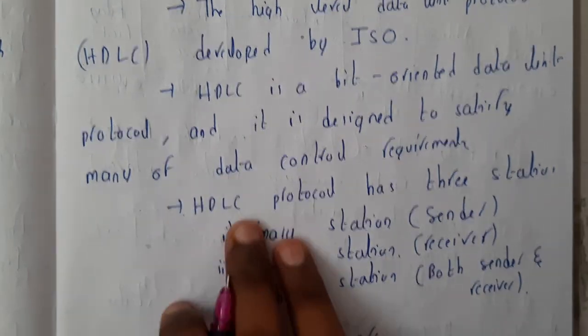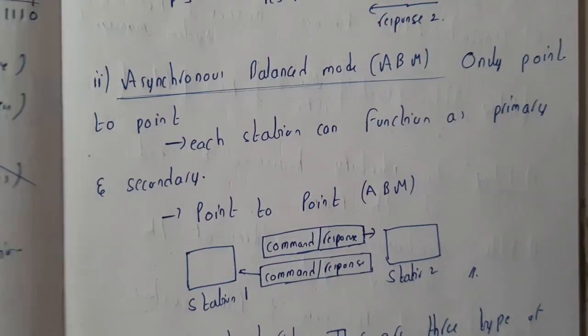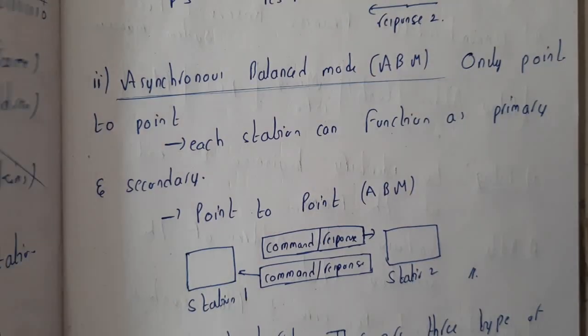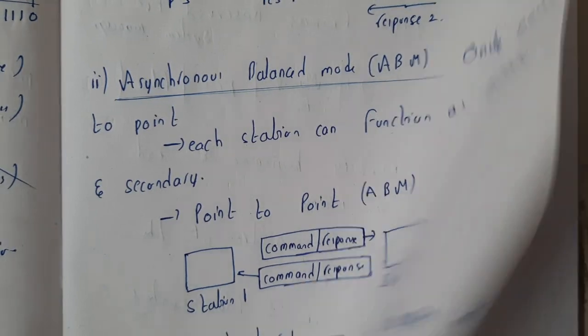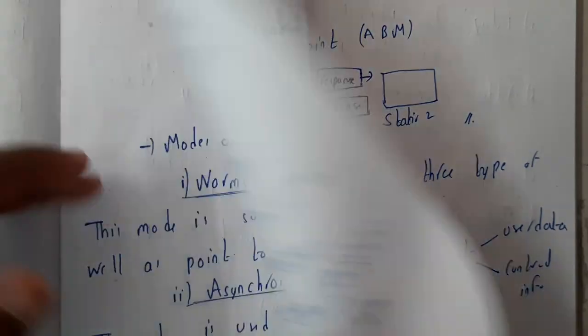The HDLC protocol has three stations: primary, secondary, and combined. Now let's go through those things. After that, we'll go through the modes and then the frame structures. The first type is the normal response mode.